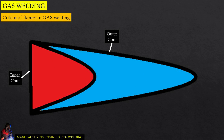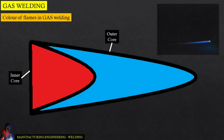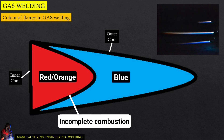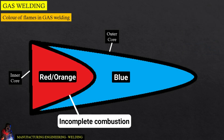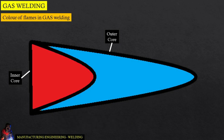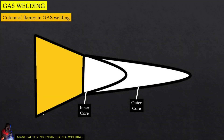The color of flame in gas welding is basically a combination of two colors: red or orange and blue. The inner core has incomplete combustion, and hence the color here is red or orange, whereas the outer core attains complete combustion and the color is blue. But why is there any incomplete combustion and the corresponding red coloration?